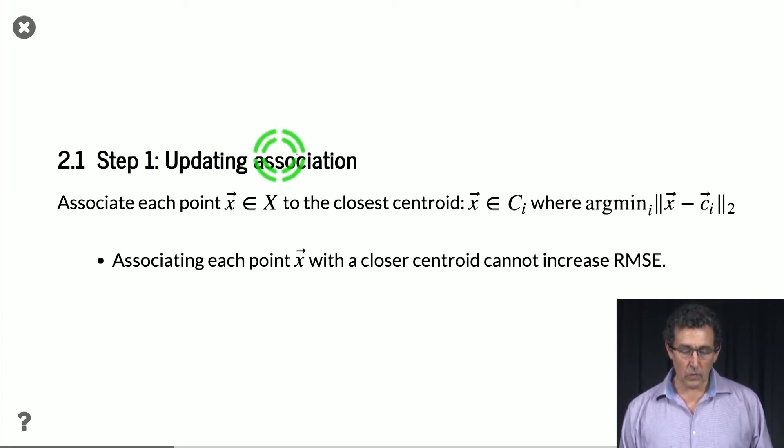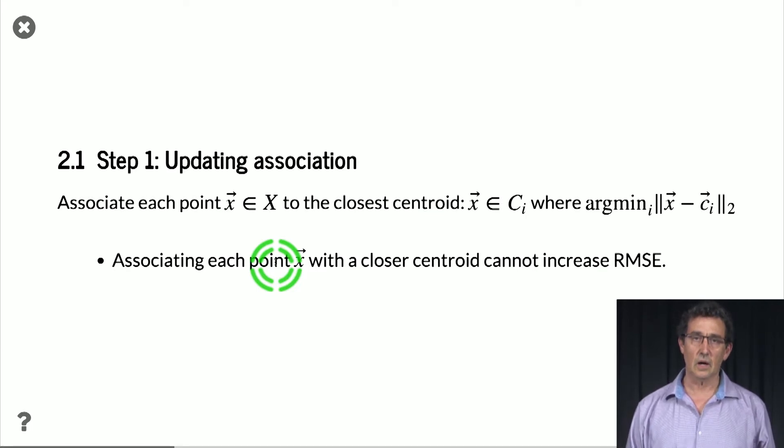So for step 1, where we are updating the association, we are associating each point x with the closest representative. Well, in this case, it's pretty easy to convince yourself that if I change the centroid that I'm using from something to something that is closer, I'm definitely going to decrease the RMSE.